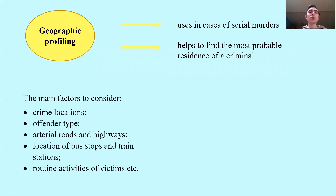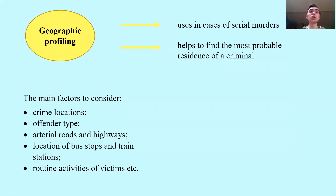The main factors to consider while using geographic profiling are crime locations, offender type, arterial roads and highways which must have been used by the criminal, location of bus stops and train stations, routine activities, some victims, and others.